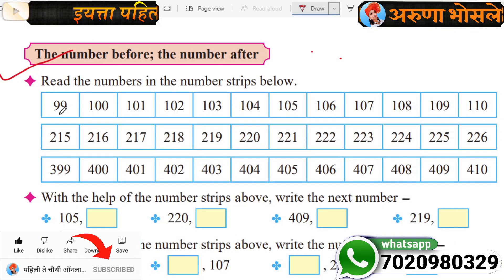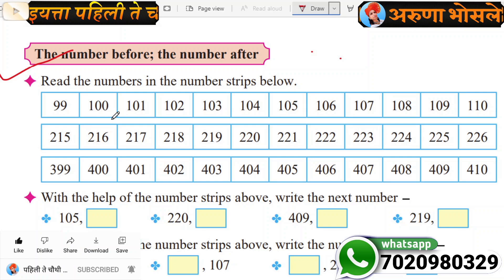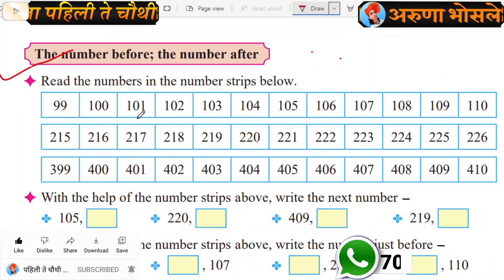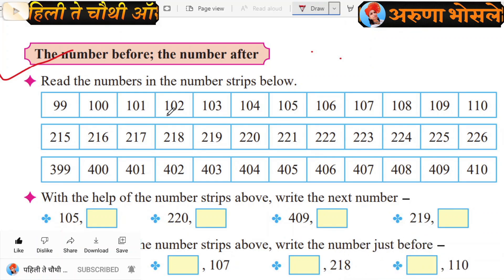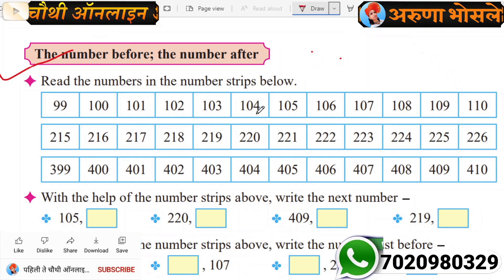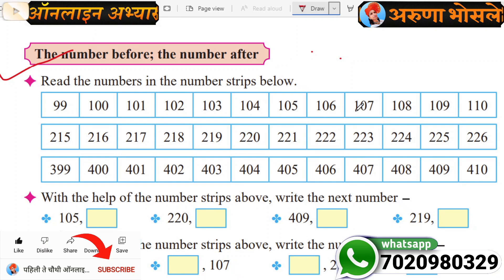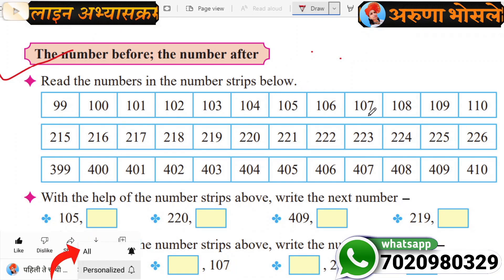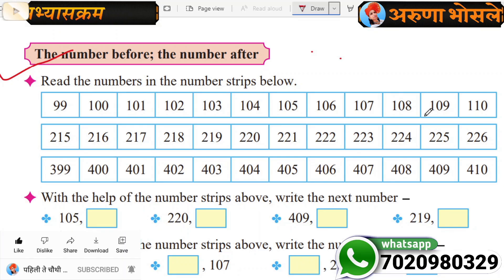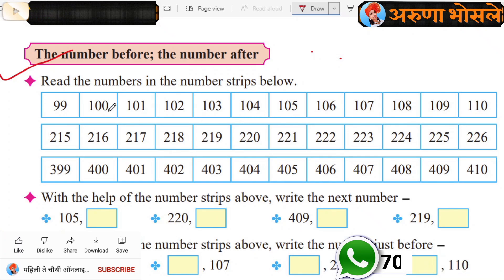Put your fingers. Very good. 99, 100, 101, 102, 103, 104, 105, 106, 107, 108, 109 and 110. Next strip.